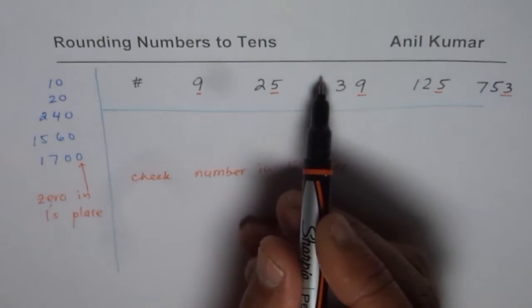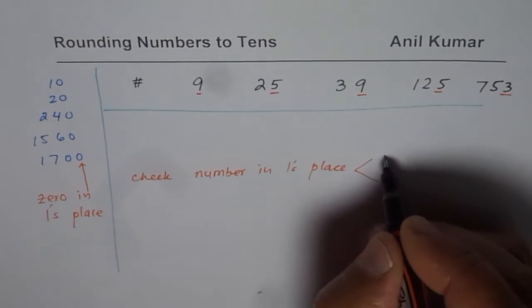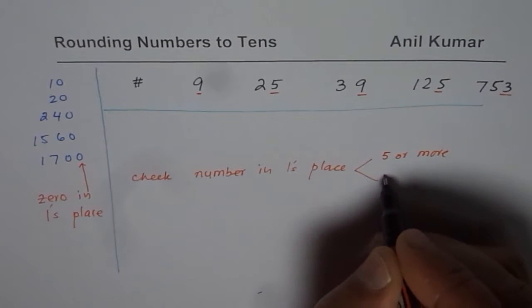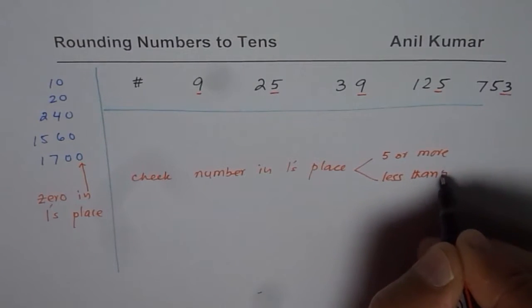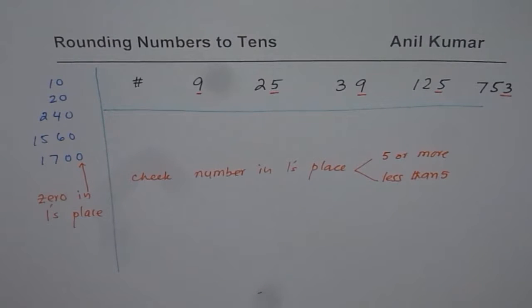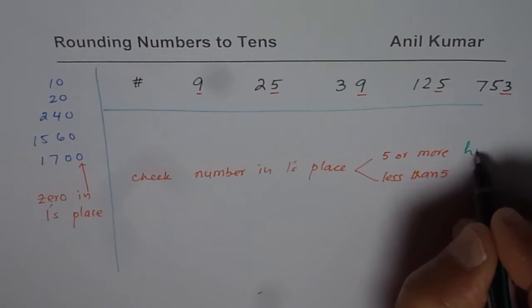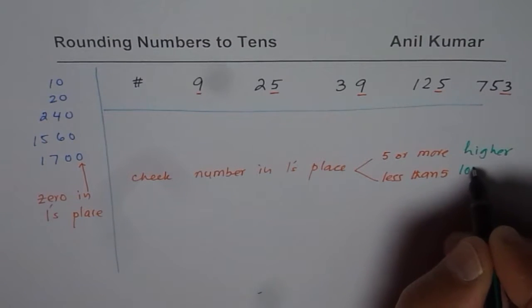When you check, the number could be 5 or more or less than 5. So there are two cases, we could have 5 or more or less than 5. Now if it is 5 or more, then round higher, then you have to write higher number. If less than 5, write down the lower number.